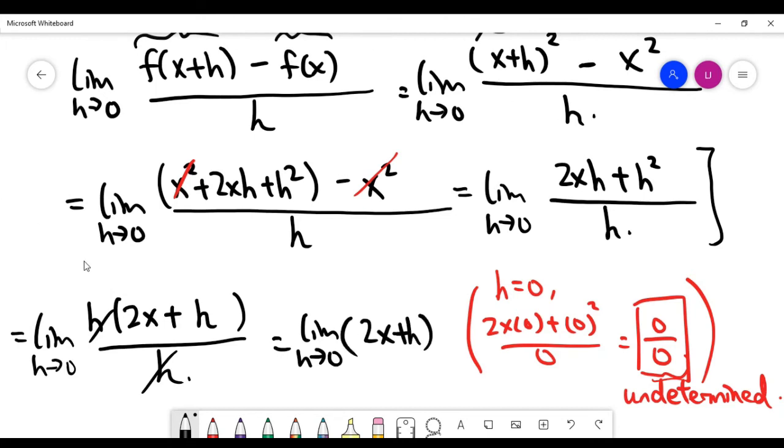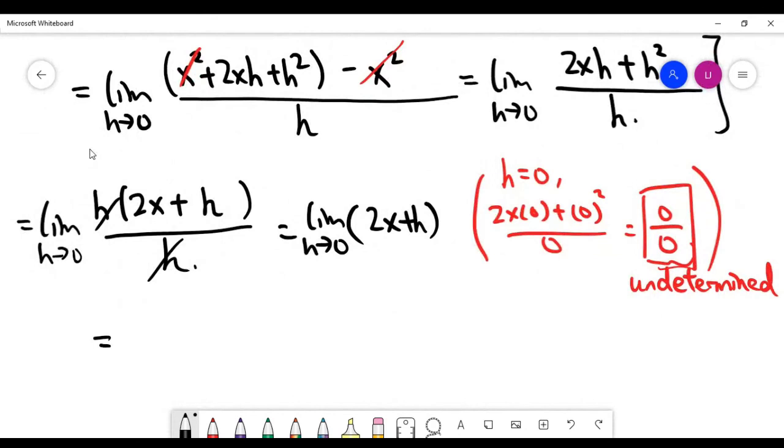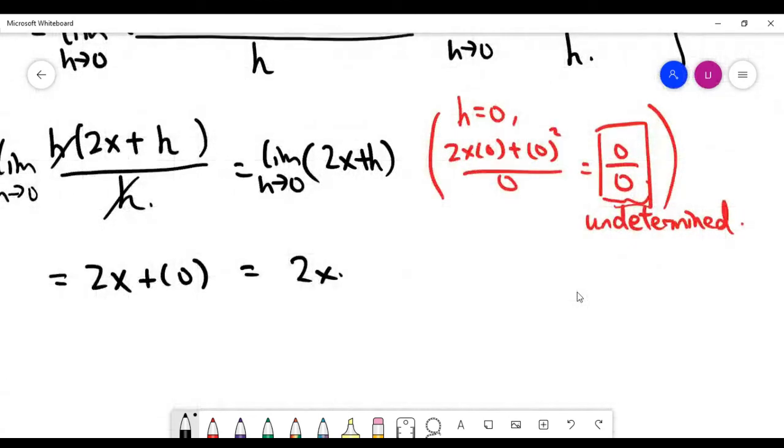So what you have is the limit h goes to zero for 2x plus h. And now I think it's very good because I can just take h to be zero as a limit problem. So it means that the answer comes out to be 2x. It means after resolving the limit we have, we actually found that the derivative f prime of x is actually 2x.